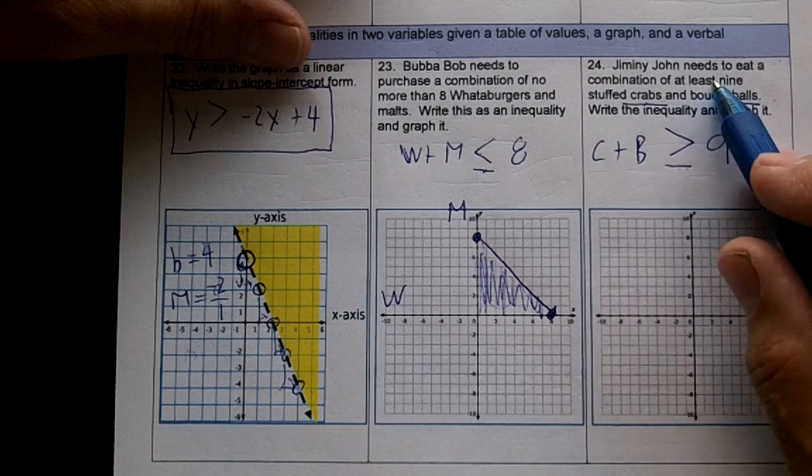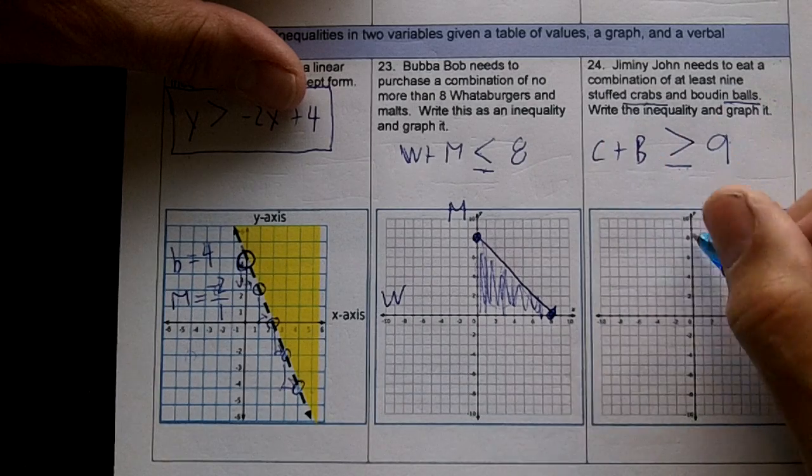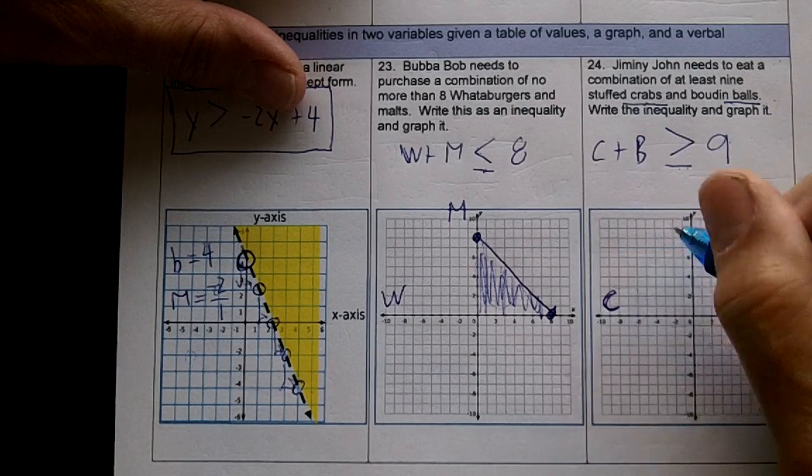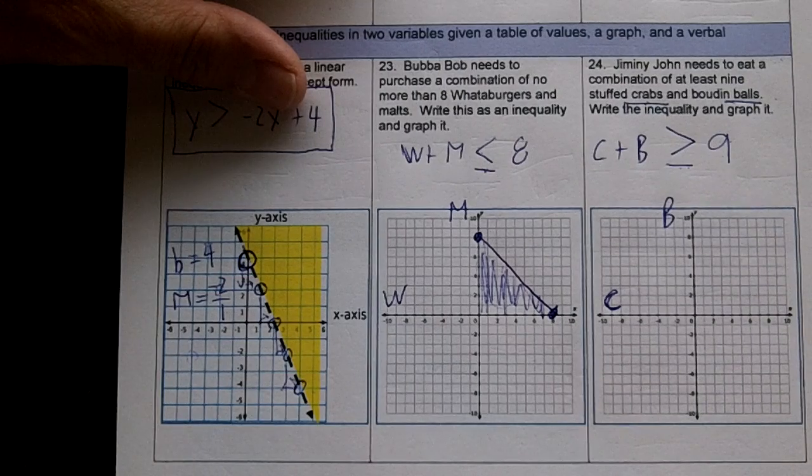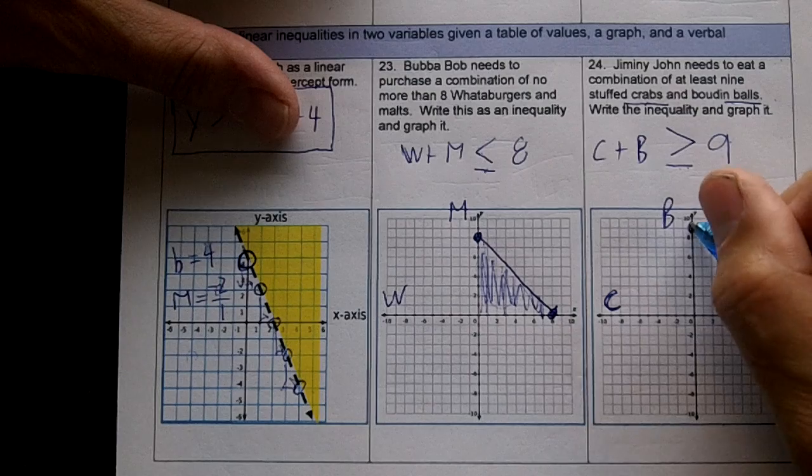Okay, he's got to eat at least nine. That means nine or more. So if I cover this up, the crabs would be nine. Let's do crabs for the x, boudin balls for the y. So the crabs have got to be nine, and the boudin balls have got to be nine, right?